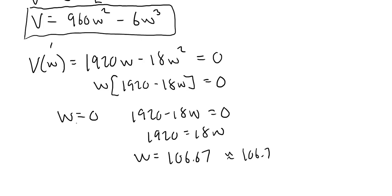Now, what do we do with this W equals zero? Well, that wouldn't make any sense. If the width was zero, we don't have a bag. So we can disregard that. So the only realistic answer is that the width is 106.7.